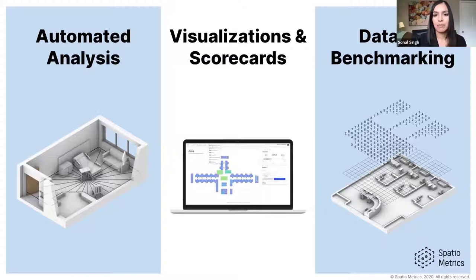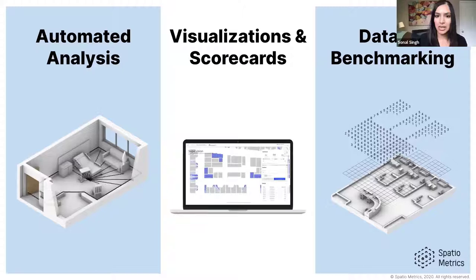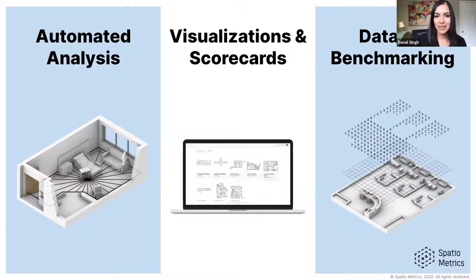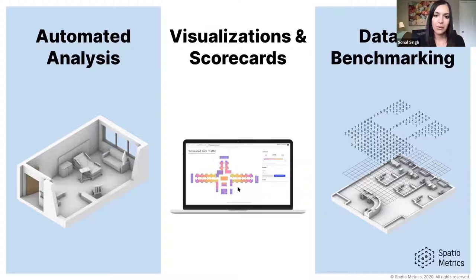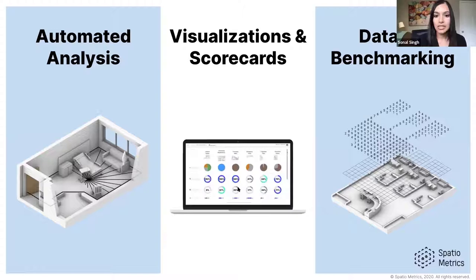When our team stepped back, we identified three areas to address these barriers. First, automation — it has to be quick and easy to measure any metric a designer, owner, or both care about. Second, visualization — we need better ways to visually digest and communicate the value of design trade-offs so you can drive project consensus faster and gain clarity in early design phases.